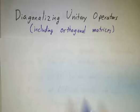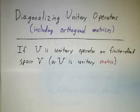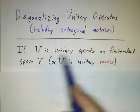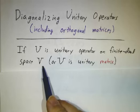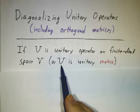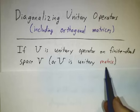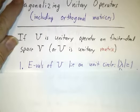Well, it turns out that unitary operators have almost the same properties and they're almost as nice. So let's suppose that we have U as a unitary operator on some finite dimensional vector space, or if you prefer, you can think of U as a unitary n by n matrix.